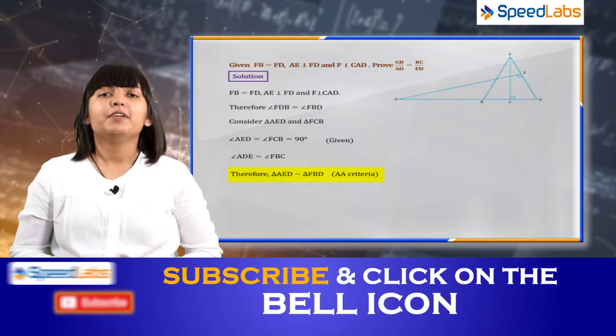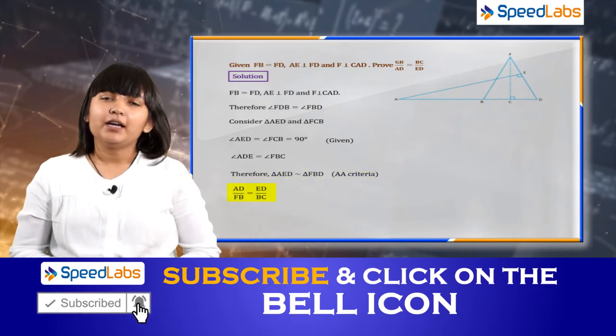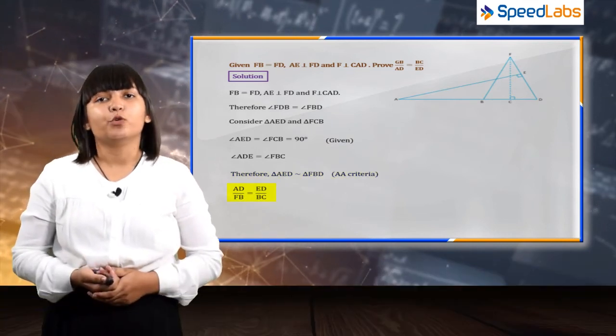So by AA criteria, we can say that these two triangles are similar, and we know that the corresponding parts of similar triangles are proportional.